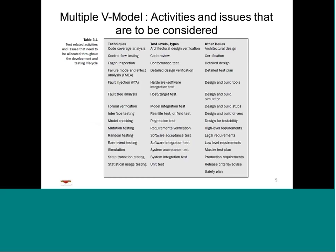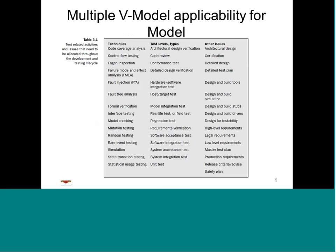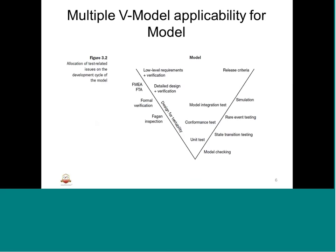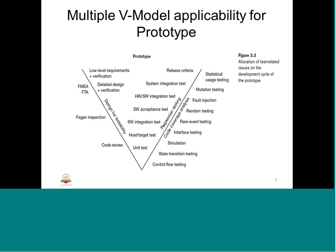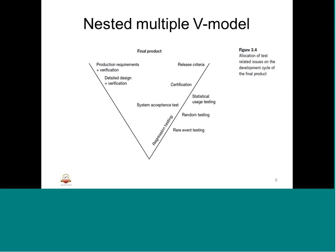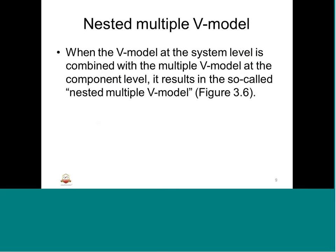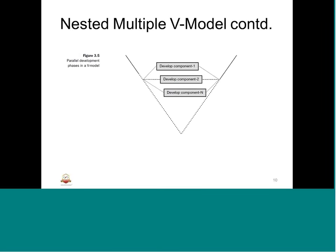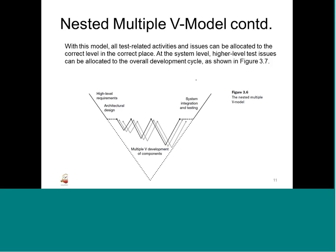We went through the activities that are involved - techniques, test levels, types, and other issues - and the mapping to the multiple V-model. We also studied the allocation of test-related issues on the development cycle, on the prototype, and on the final product, and how it is applicable for the multiple V-model. Then we went through the nested multiple V-model, which has multiple V-models based on the components that we have in larger systems.